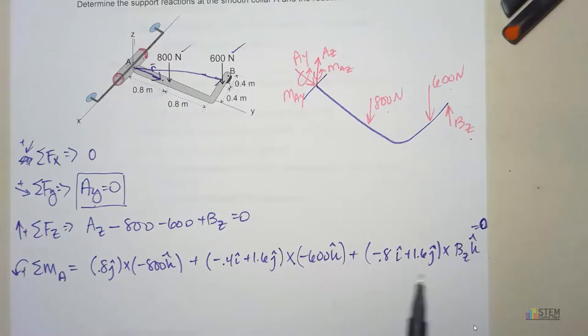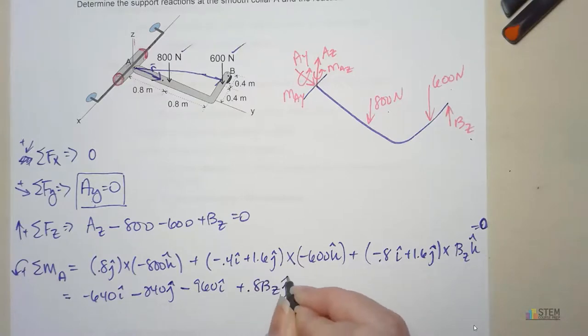If we go through here and do the cross products, what we get is negative 640i, that's from right here, minus 240J, minus 960i, plus 0.8 BZJ, plus 1.6 BZI. And that's what we get for the forces.